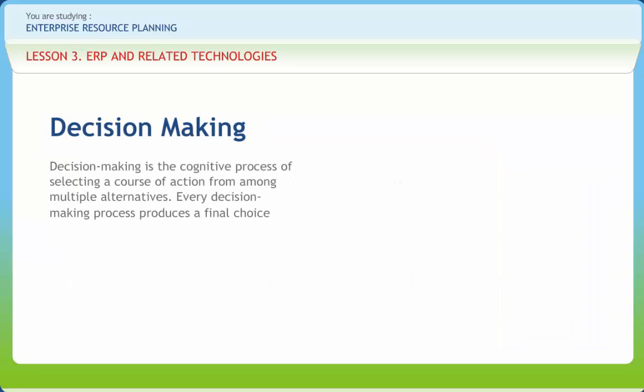Decision making is the cognitive process of selecting a course of action from among multiple alternatives. Every decision making process produces a final choice. Decision making is said to be a psychological construct — a construction that imputes commitment to action. That is, based on observable actions, we assume that people have made a commitment to effect the action.